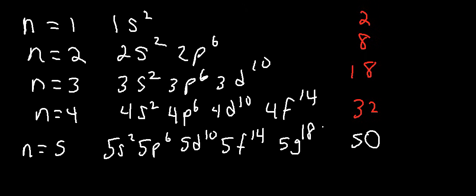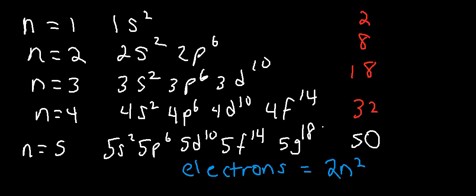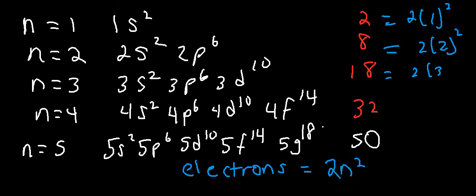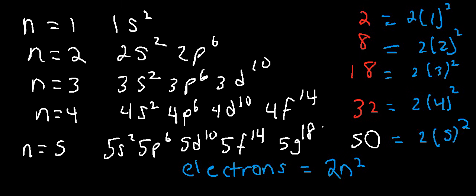There's an equation that can help you find the maximum number of electrons in any energy level: it's 2N². So for example, when N is 1, it's 2 times 1 squared, which is 2. When N is 2, it's 2 times 2 squared, you get 8. When N is 3, 3 squared is 9 times 2, that's 18. For 4, 4 squared is 16, you double it, you get 32. 5 squared is 25 times 2, you get 50.